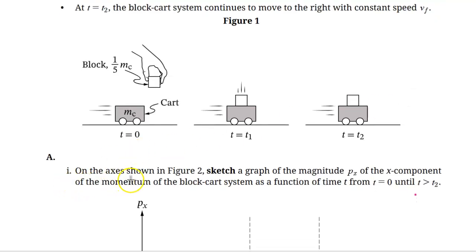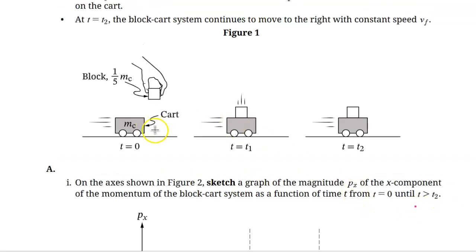Part A: On the axes shown in Figure 2, sketch a graph of the magnitude px of the x-component of the momentum of the block-cart system as a function of t from t=0 until t is greater than t2. Before we sketch the momentum graph, let's look at the cart system as it's moving to the right. Initially, the cart is moving at constant speed in a straight line, so it has constant velocity. Its momentum is constant. The block has no momentum horizontally because it's not moving left or right.